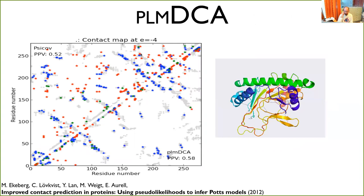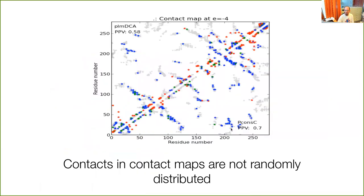If you instead use DCA methods — one called PSICOV and one called plmDCA — both get around 50 to 58 percent correct contacts. You can find patterns along the map, and although some are wrong, most are informative. You could imagine using these contacts to build the structure and generate a model for the protein. The requirement was that you actually needed a very large protein family — it only worked with thousands of sequences, not for small families.